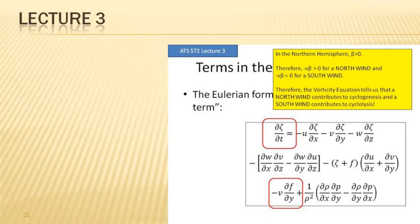Continuing into the third lecture, the beta term is basically just the advection of planetary vorticity. Anytime you have a wind from the north, you're bringing more planetary vorticity to your location — that is positive vorticity advection, it's cyclogenic. A south wind always contributes to cyclolysis.